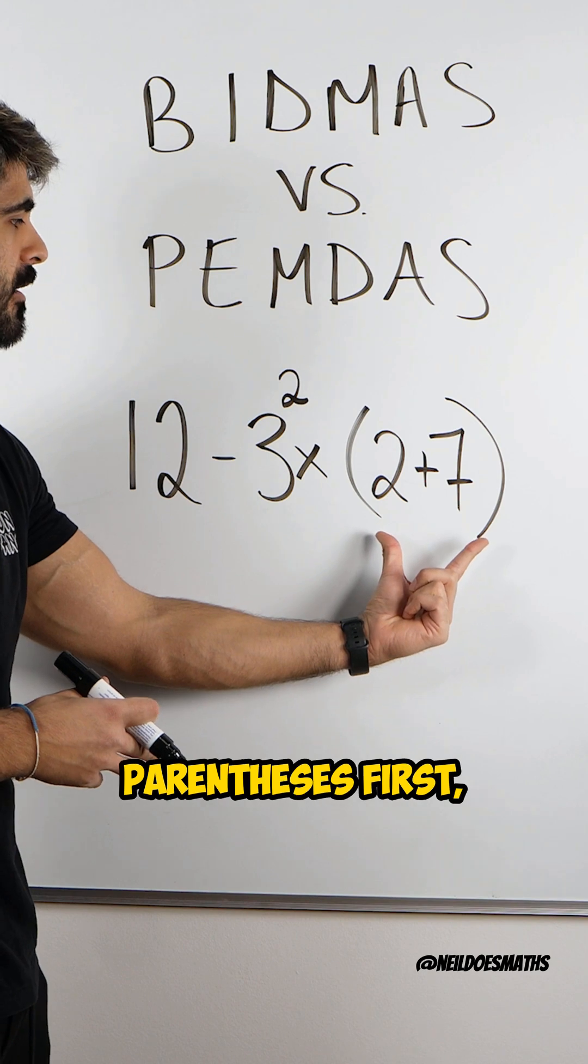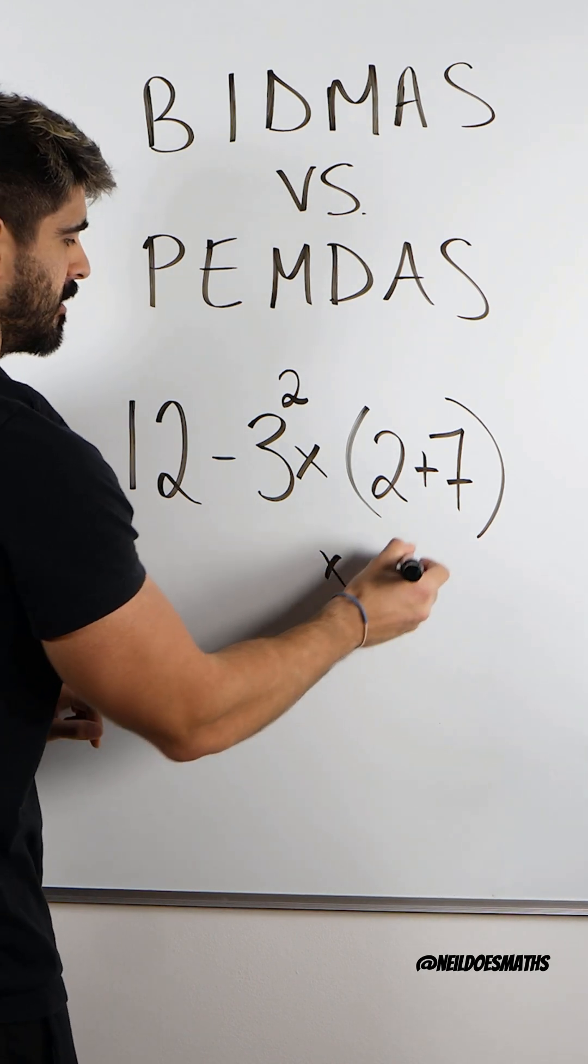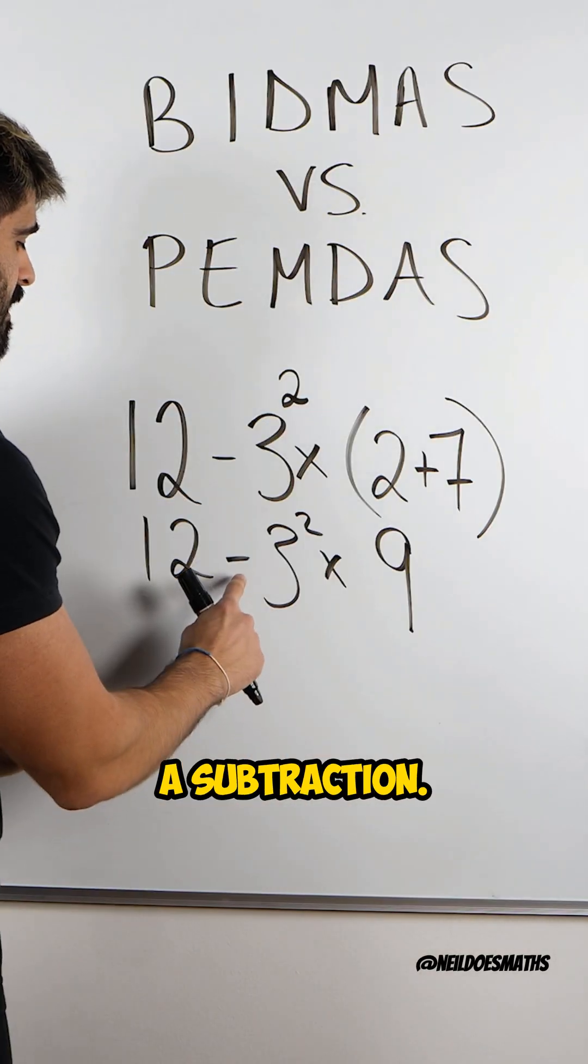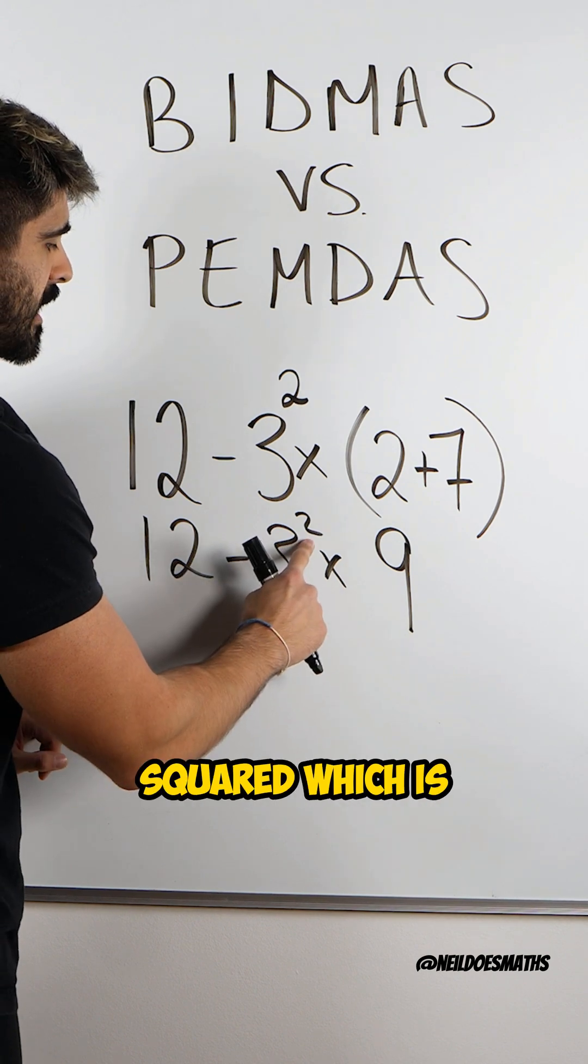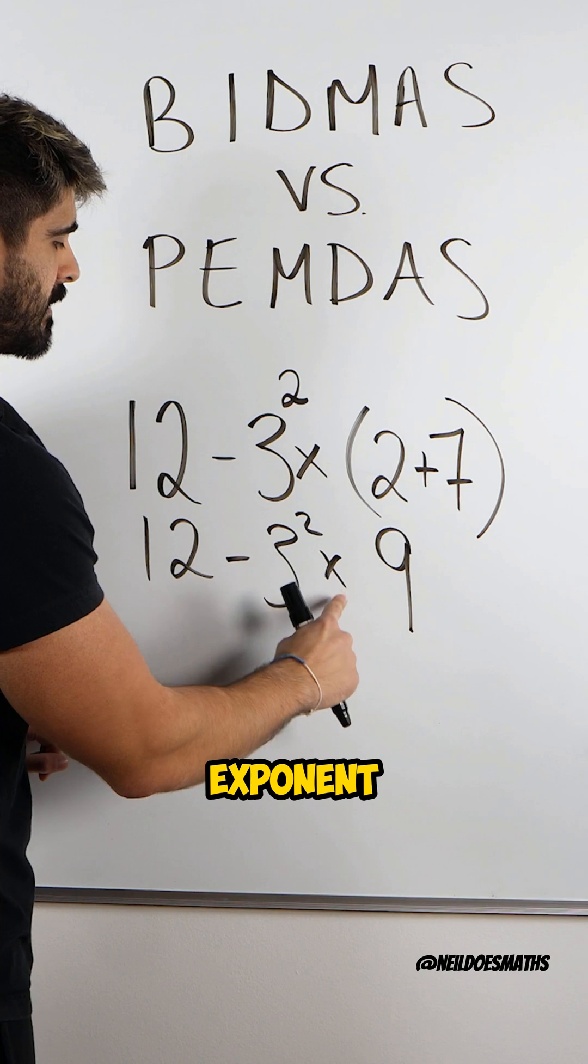We're going to deal with the parentheses first, which is nine. What do we do next? Well, we have a subtraction. We have a squared, which is an index or an exponent. And we have multiplication.